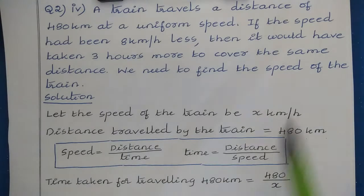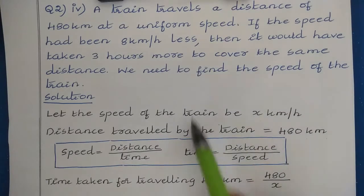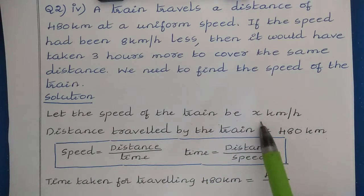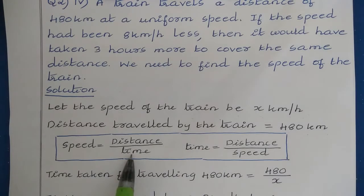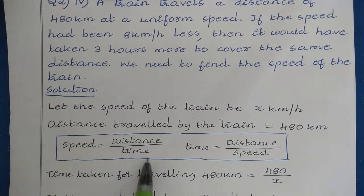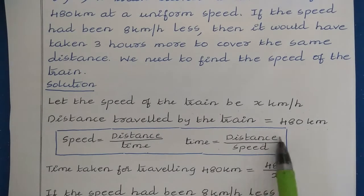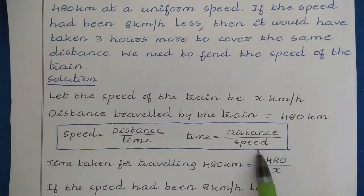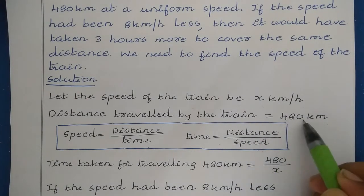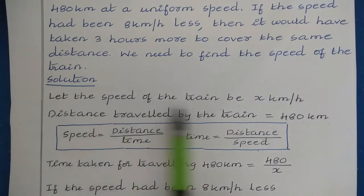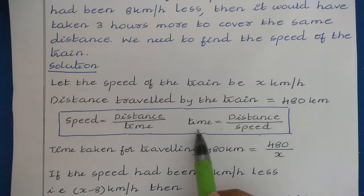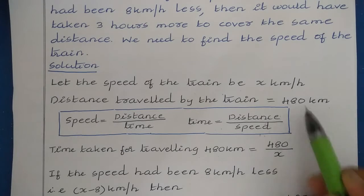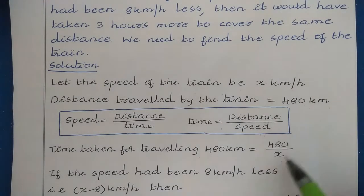Let the speed of the train be x km per hour. We know the formula: speed = distance / time, so time = distance / speed. Substituting the values, time = 480 / x. This gives us the time taken to travel 480 km at speed x.